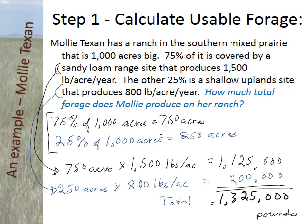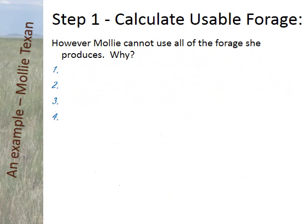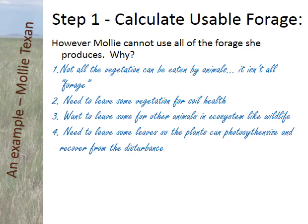There are a lot of reasons that Molly can't use all of that forage on her ranch. Think about why, even if you knew how much total biomass you had, you wouldn't want to use it all for grazing animals. Here are four good reasons to think about how much forage you want to leave on the ranch to sustain it from year to year. First, not all of the forage can be eaten by animals — some of that biomass could be wood, cactus, or poisonous plants. Things that would not be forage for animals, so you don't want to include them in your forage calculation.